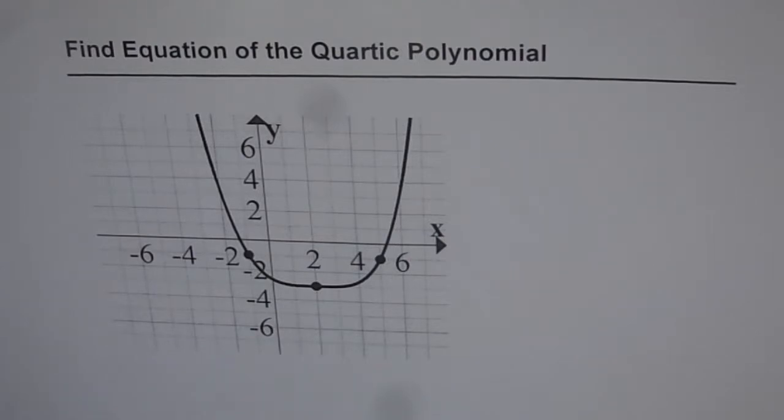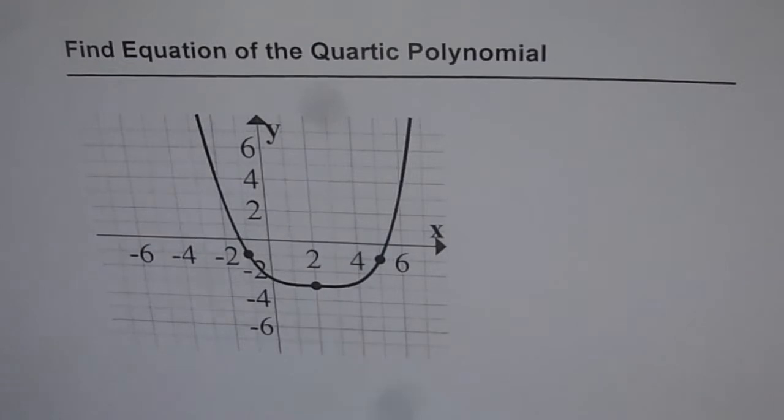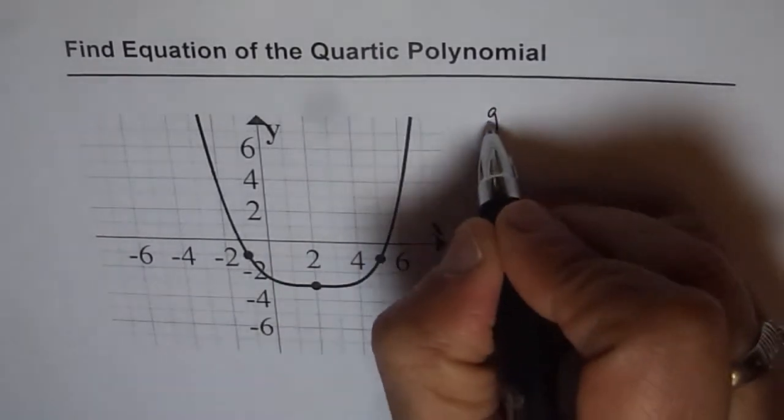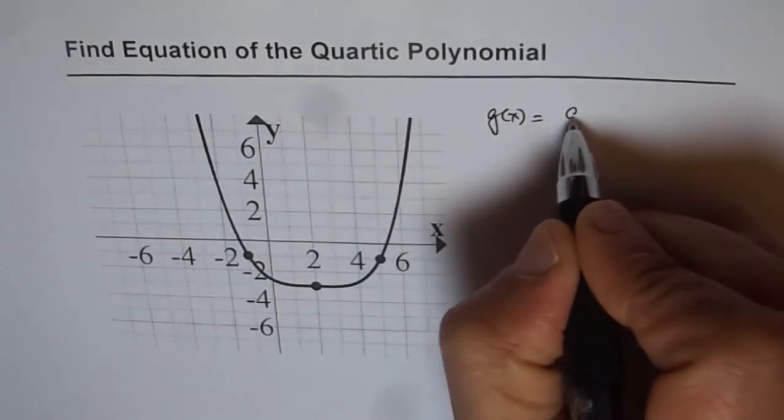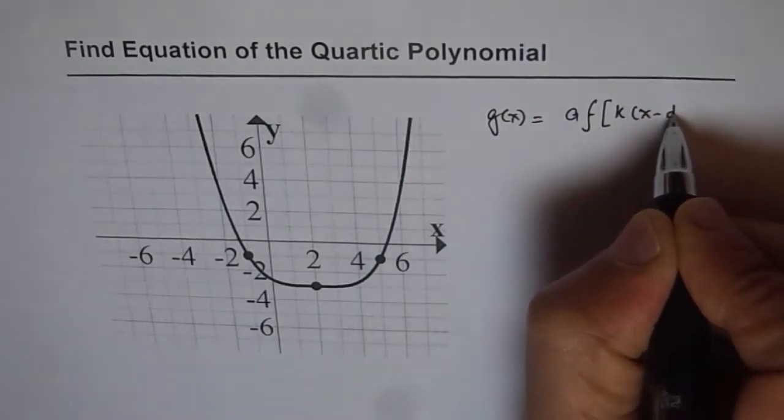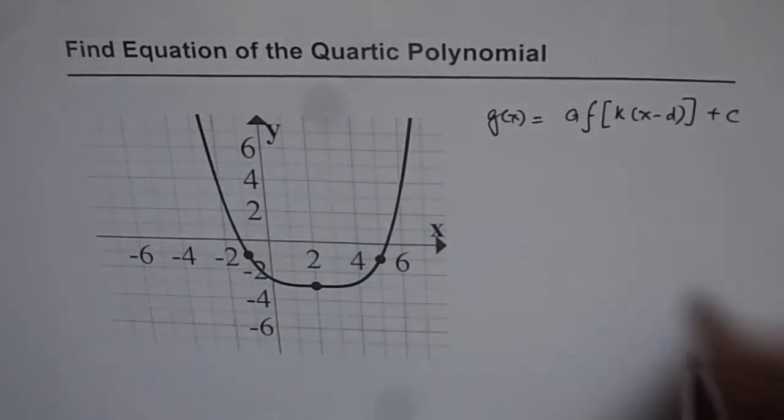Here is my suggestion. As we see, it is a quartic polynomial. It is given to us. And we could write this transformed equation in the form of g of x equals to a times the function k times x minus d plus c. That is a general transformed form, right?